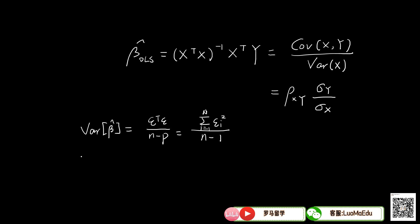And to know whether it is significant, we need another measure, which is the variance of beta hat. So in single variable, it is the sum of the residue squared divided by n minus 1.